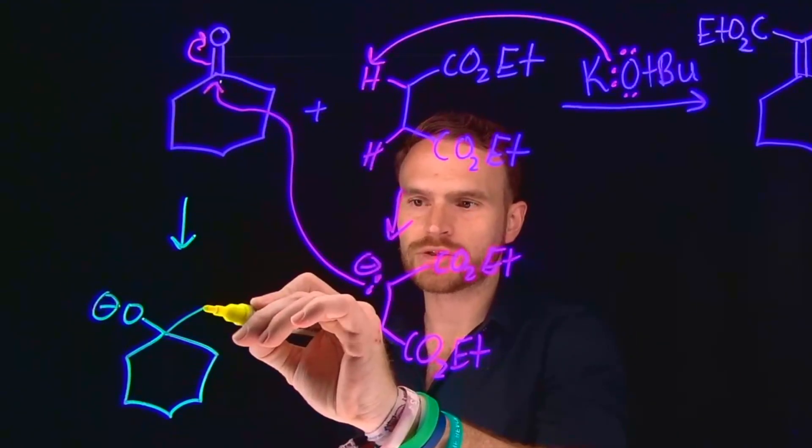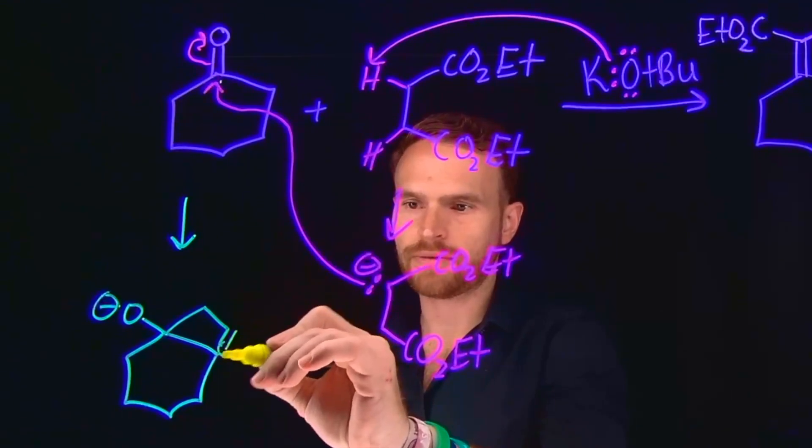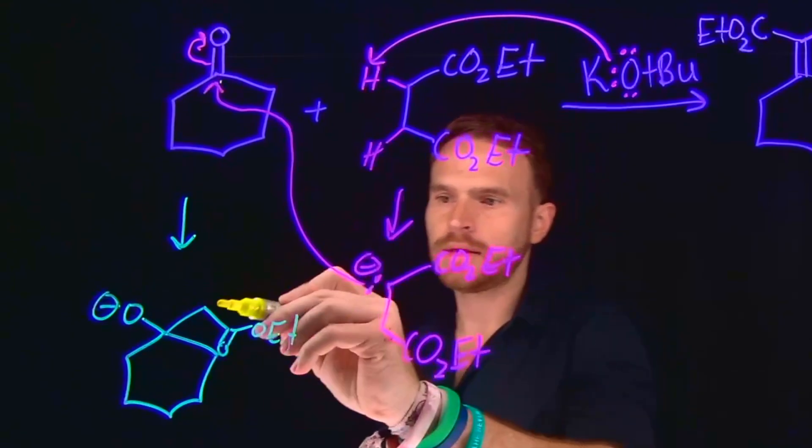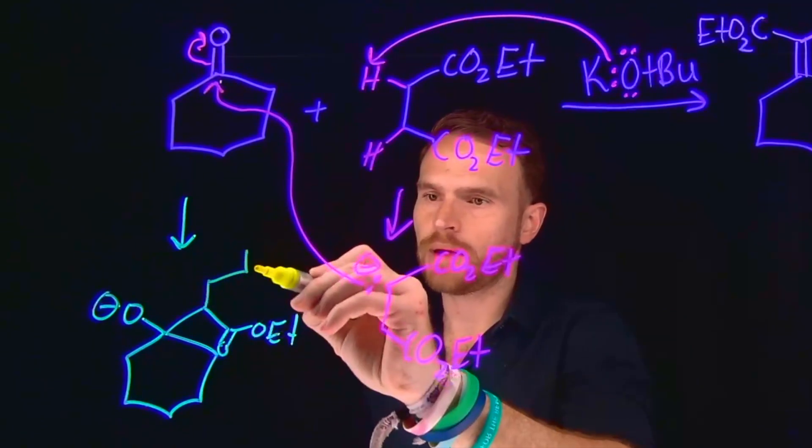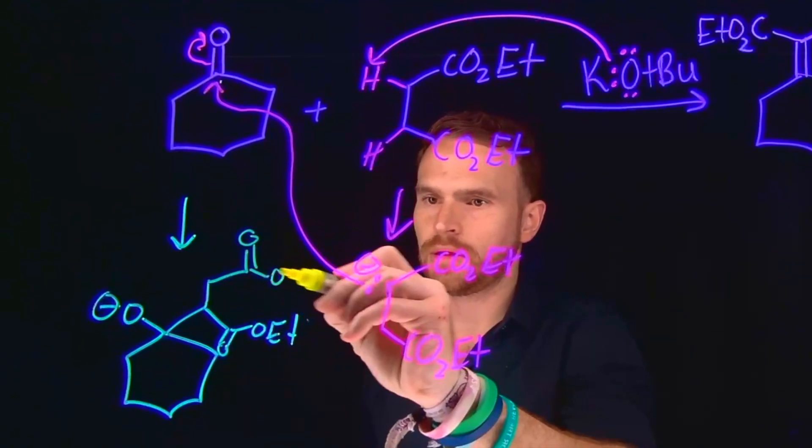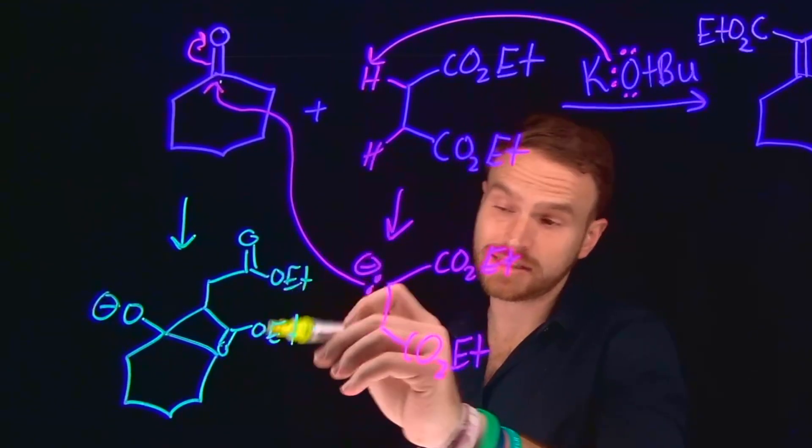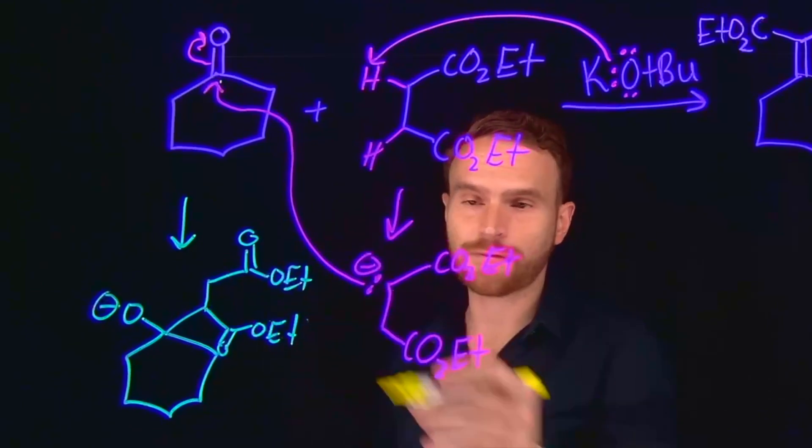From there, there is one carbon away from that ester. Now importantly, there is another carbon that is adjacent to that, and then you form another ester. The distance of these atoms from these esters from this carbon differs by one carbon.